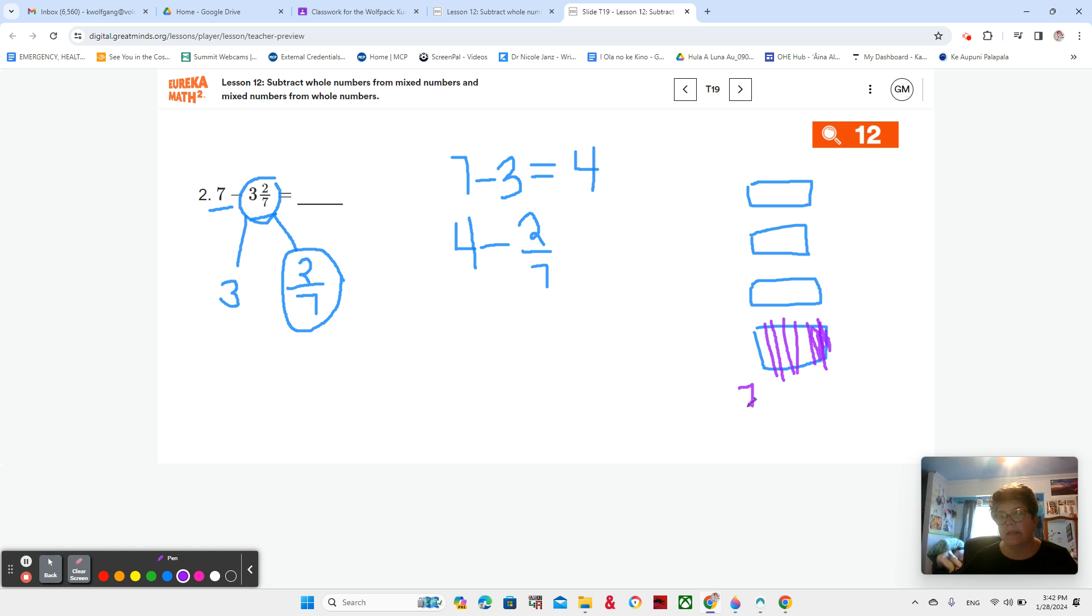So basically, I have 7 sevenths, right? That would be 1 whole. And I'm taking away 2 of them. So 7 sevenths minus 2 sevenths. That leaves 5 sevenths. And you can see it right there.